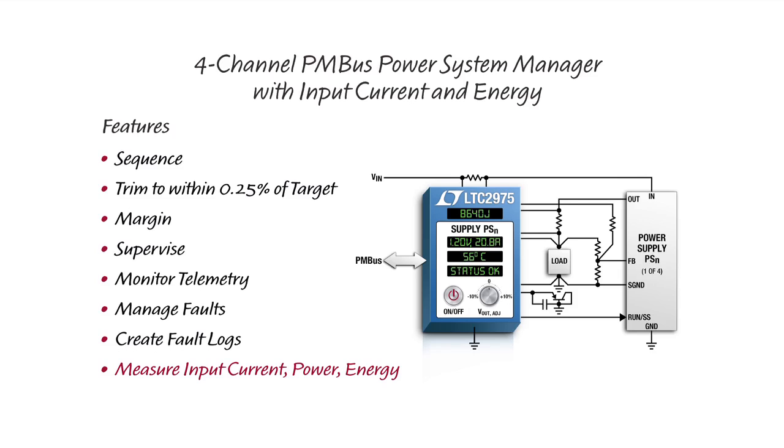Like the LTC2974, the LTC2975 can turn four output supply rails into a managed power system which can sequence, trim, margin, supervise, monitor telemetry, manage faults, and create fault logs.